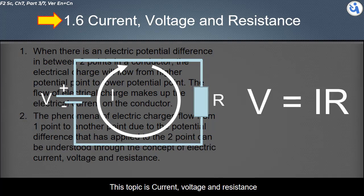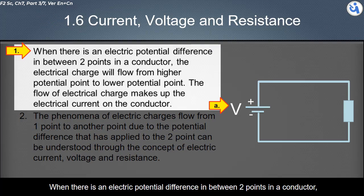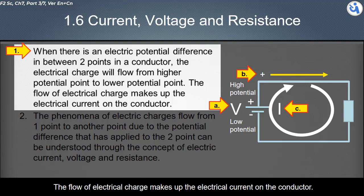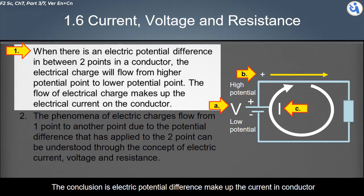This topic is current, voltage, and resistance. When there is an electric potential difference between two points in a conductor, electrical charge flows from higher potential point to lower potential point. The flow of electrical charge makes up the electrical current on the conductor.